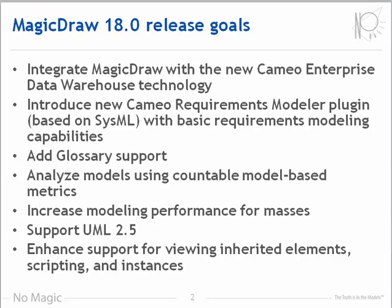We also invested a lot of effort in improving MagicDraw performance. As a result, several modeling tasks are now automated, and most functions are much faster. Version 18 supports the latest version of UML, version 2.5. There are several other enhancements, including the ability to view inherited elements, support for common scripting languages for tasks that used to require specialized languages, and support for working with instances more efficiently.